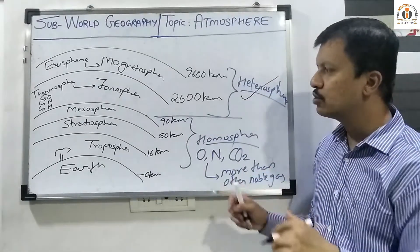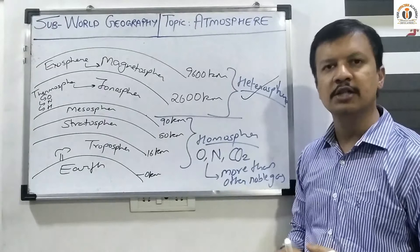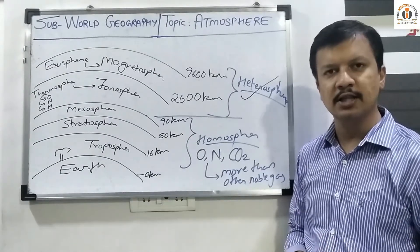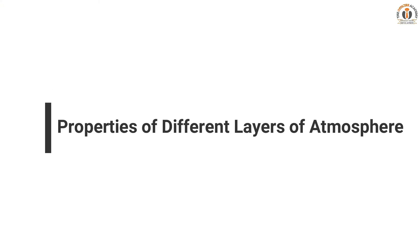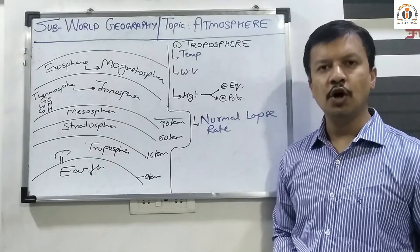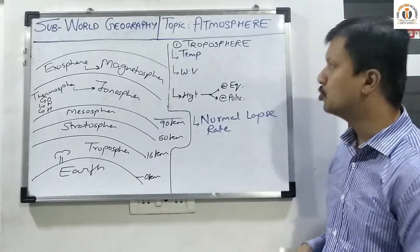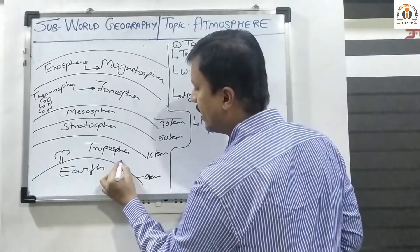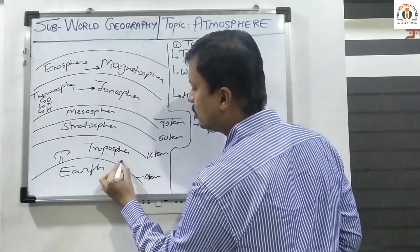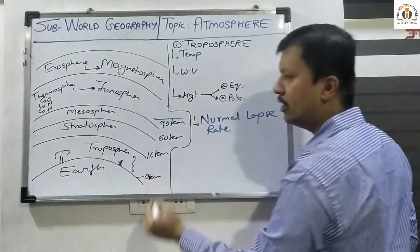Now we will study the properties of each layer of the earth on which maximum questions are asked in the examination. Let us start with the first layer — the troposphere. Troposphere is the base layer of the atmosphere in which all living organisms survive.